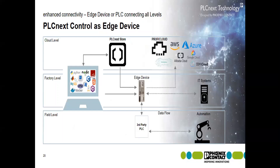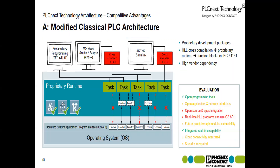PLCnext technology brings your data from the field level to the cloud level — available anywhere. If you're using a PLCnext controller, you can take data to any cloud service. Phoenix Contact has its own cloud service called Proficloud. You can also connect to any third-party cloud — that is what is meant by PLCnext as an edge device. This device functions like a PLC plus an industrial PC plus smartphone functionality.